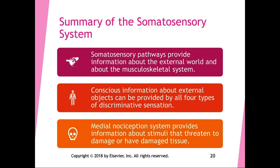The somatosensory pathways provide information about the external world and about the musculoskeletal system. Conscious information about external objects can be provided by all four types of discriminative sensation. The medial nociception system provides information about stimuli that threaten to damage or have damaged tissue — which will be important when we get into the second half of chapter 11 and start talking about nociception in detail.